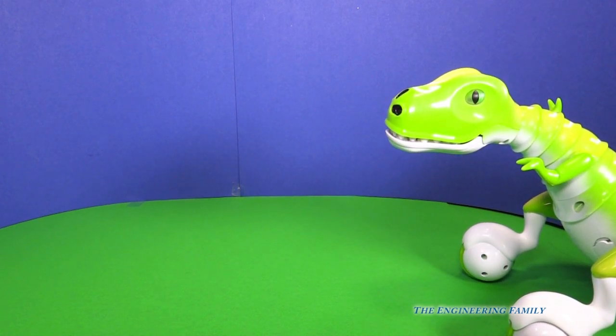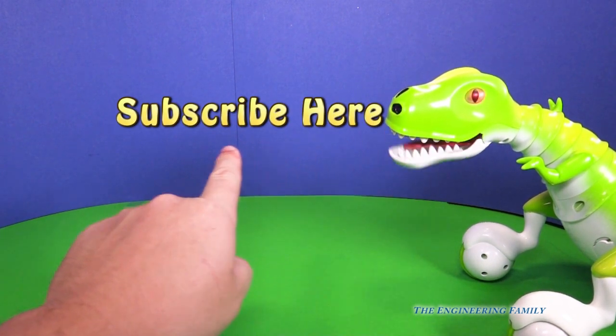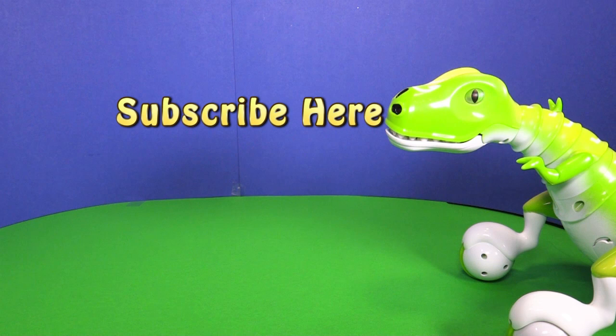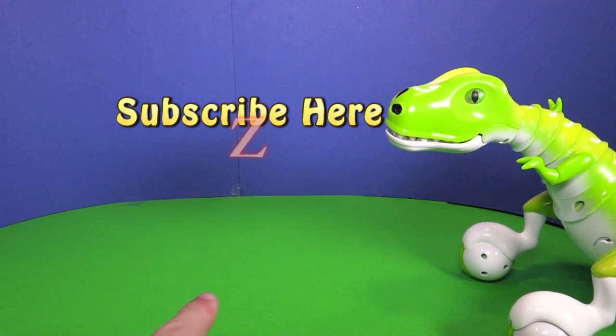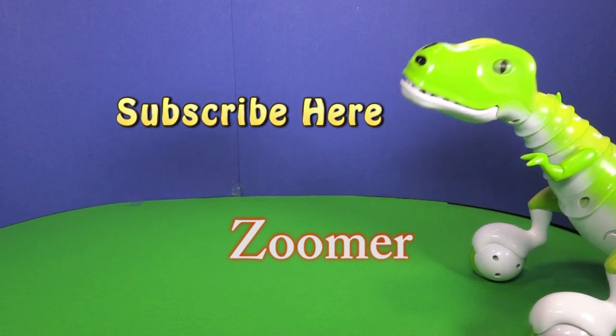And one of the things that we want you to do is right here in front of Zoomer. I'm gonna watch out. Don't bite my finger. It says subscribe here. So make sure you subscribe to the Engineering Family so you can see lots of fun videos like this one. And we've got a secret password down here. It's Zoomer. That's right. The password for this one is Zoomer. So put that in the comments section and that way we know you've seen the video and that you have seen Zoomer.